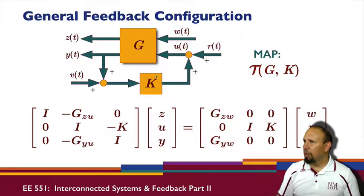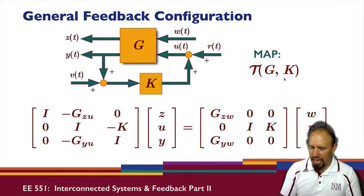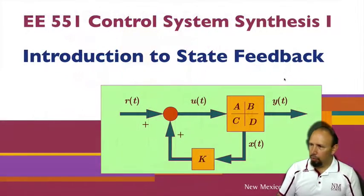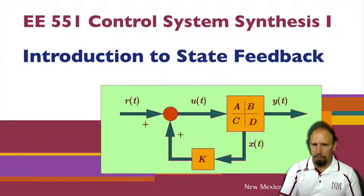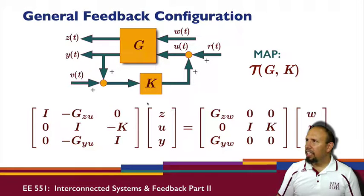And then we have a controller, and our controller also may involve a reference signal. And so again we have multiple outputs and multiple inputs, and so we have this new map that involves G and K that we're working with. So that is the general feedback configuration, and so these are some of the issues that we deal with in this kind of feedback structure.